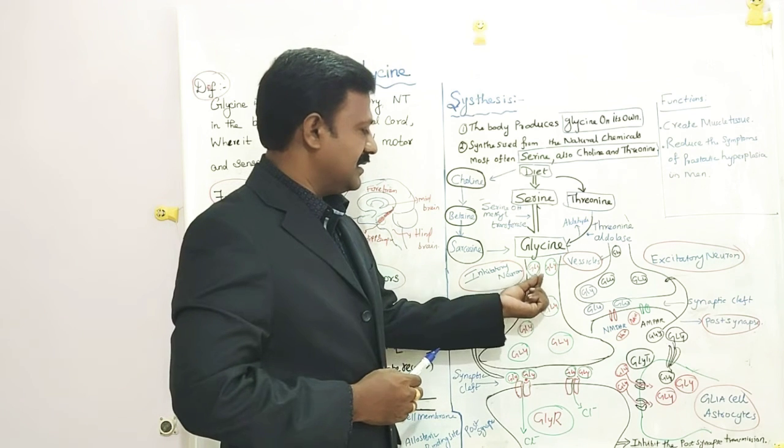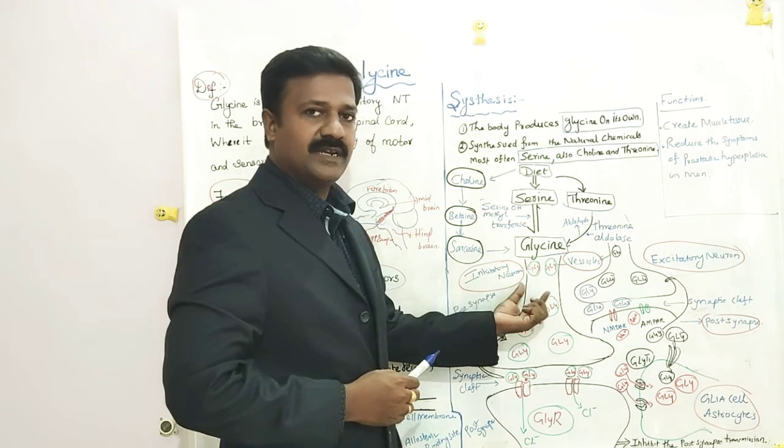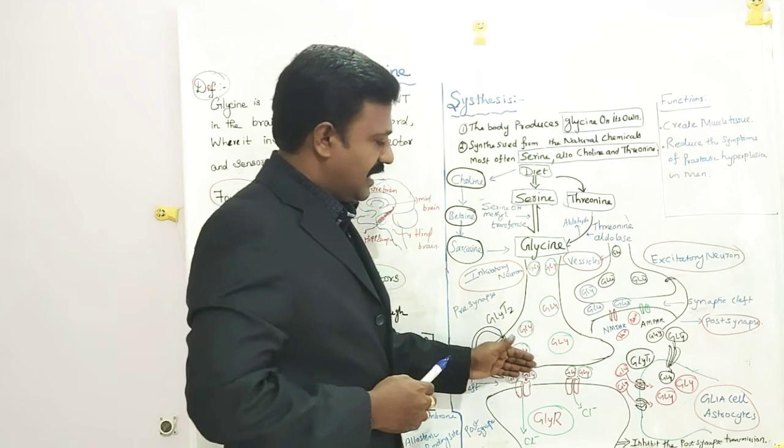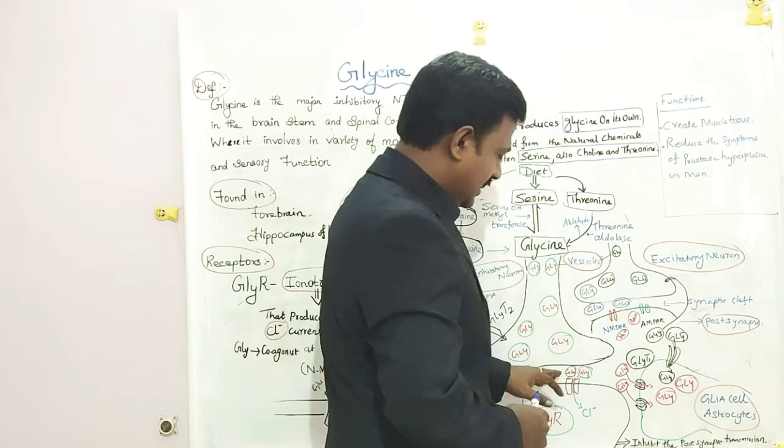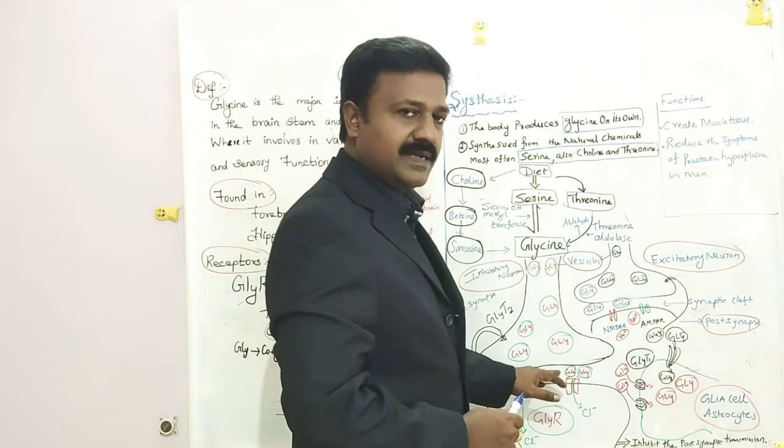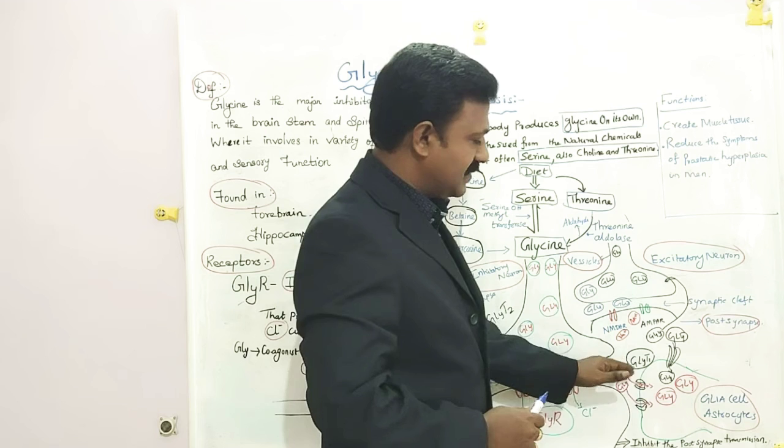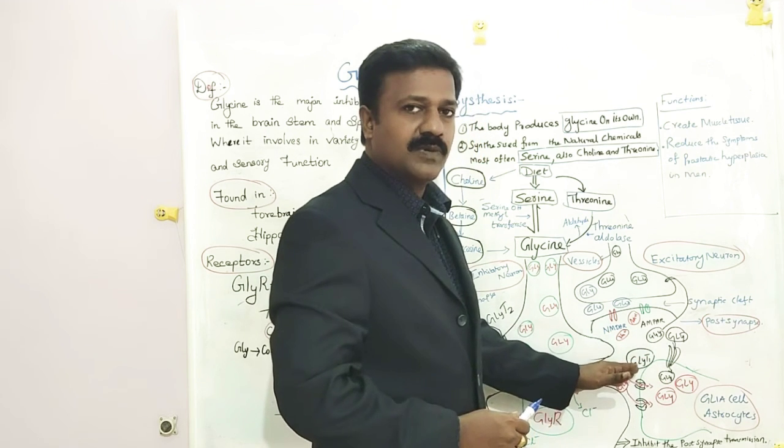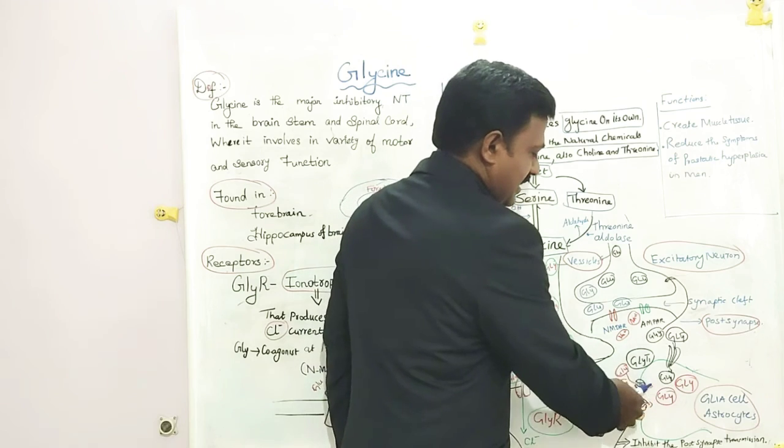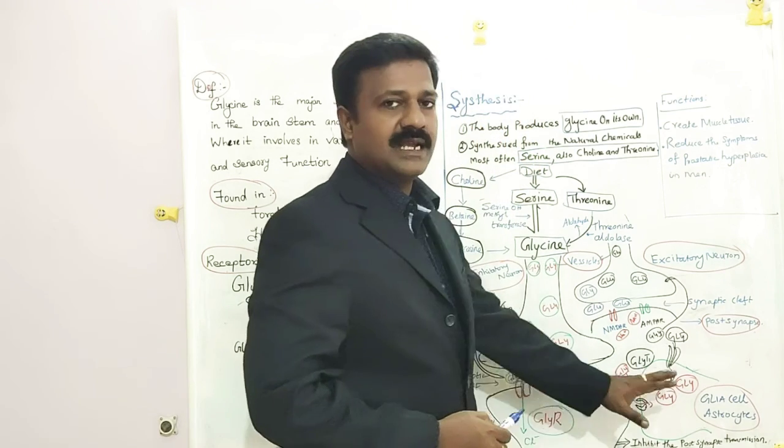The remaining unbinding Glycine neurotransmitter present in the synaptic cleft is transported into the presynapse through Glycine Transporter 2. And they are stored in the vesicles for further use. Again, the unabsorbed and unreuptaken Glycine present in the synaptic cleft is transported to the glial cell by the Glycine Transporter 1, and there it's metabolized and inactivated.